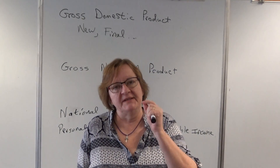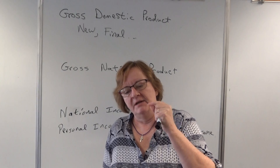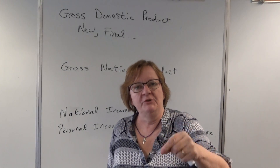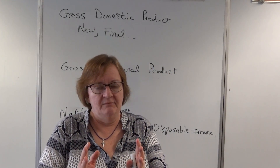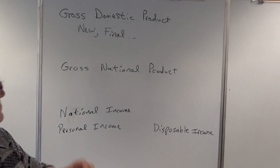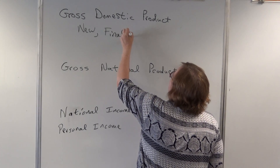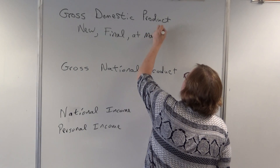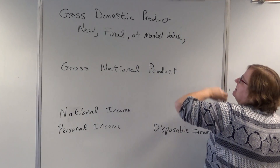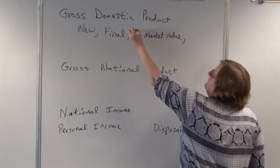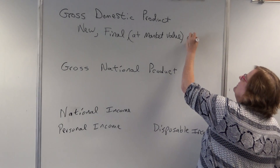If paper is sold as a final product to a consumer, we'll count it. But if it's sold to a manufacturer or publisher, we won't count it. So it's the final product sold to the end consumer that counts. GDP is measured at market value.